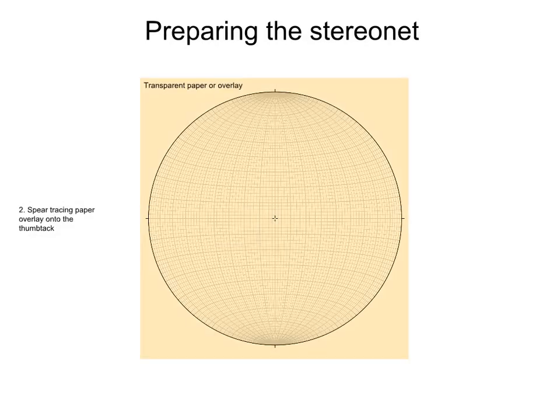Place a transparent piece of paper over the stereonet and onto the thumbtack. The transparent paper can rotate around the thumbtack. The transparent paper is also known as the overlay.